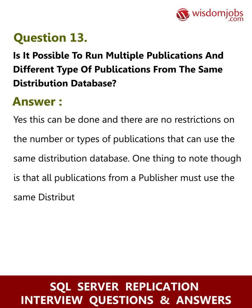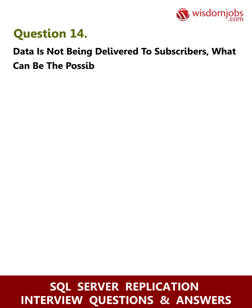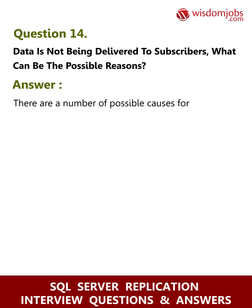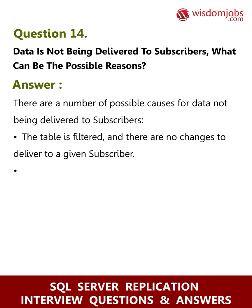One thing to note is that all publications from a publisher must use the same distributor and distribution database. Question 14: Data is not being delivered to subscribers — what can be the possible reasons? Answer: There are a number of possible causes. The table is filtered and there are no changes to deliver to a given subscriber. One or more agents are not running or are failing with an error.